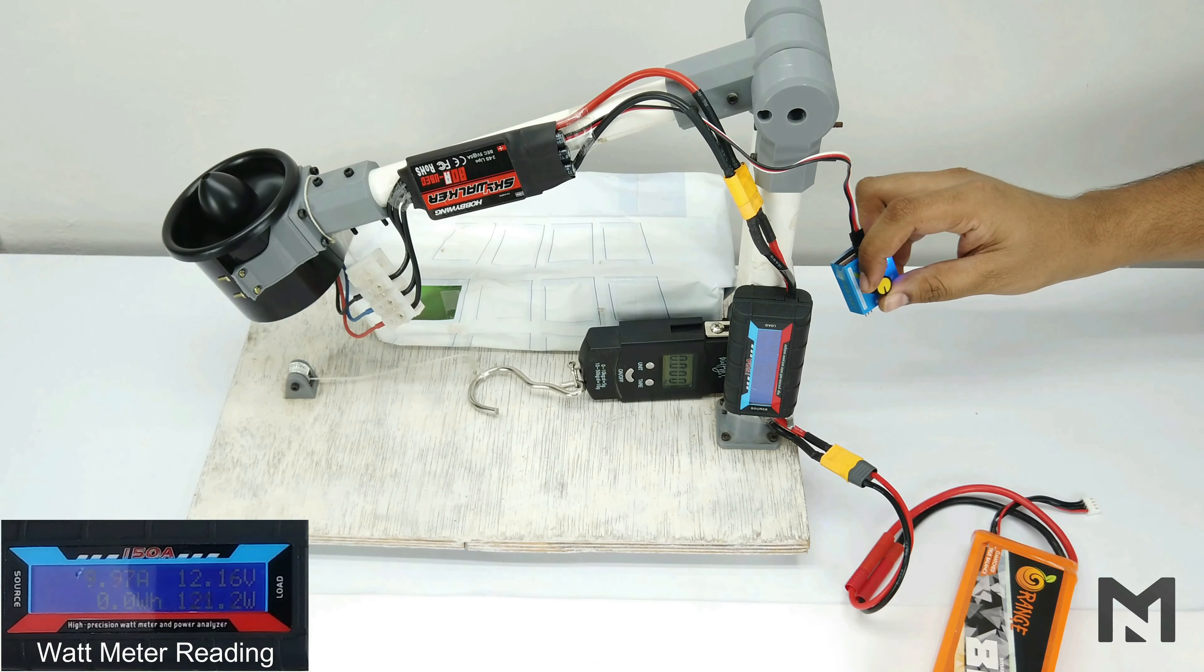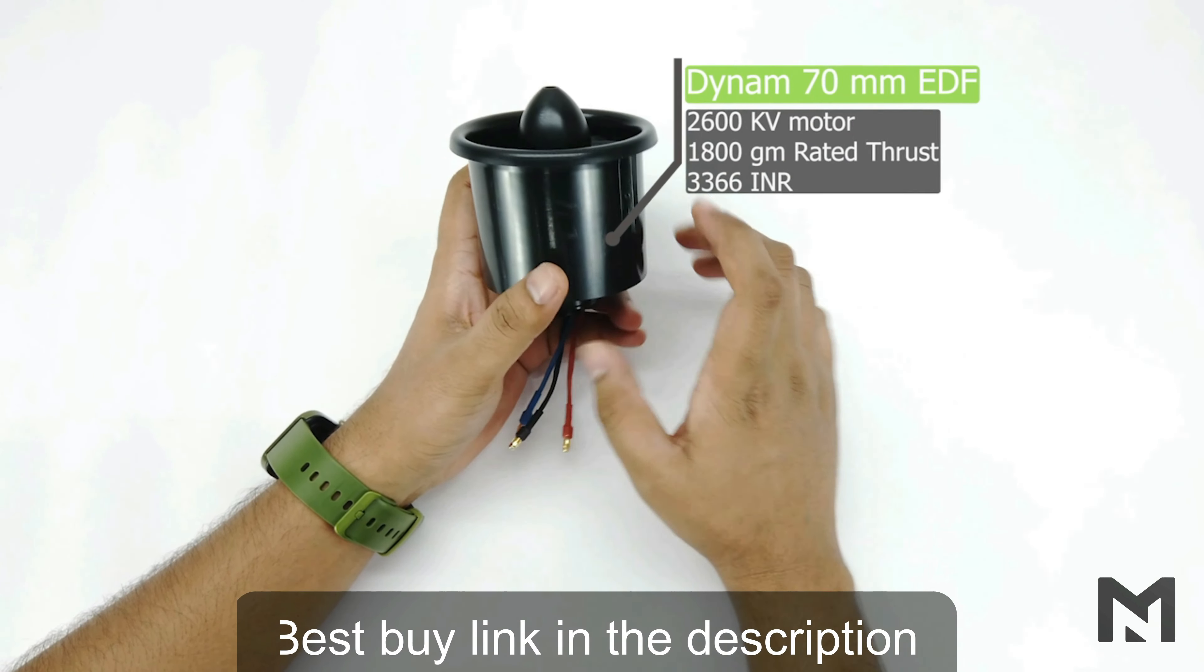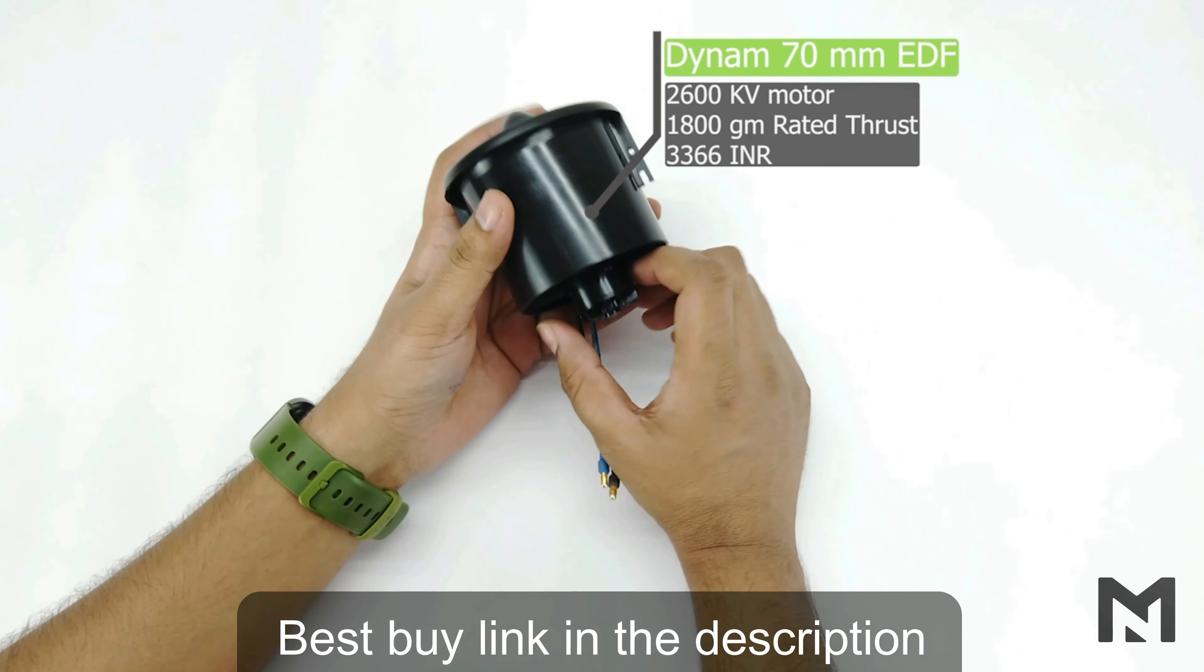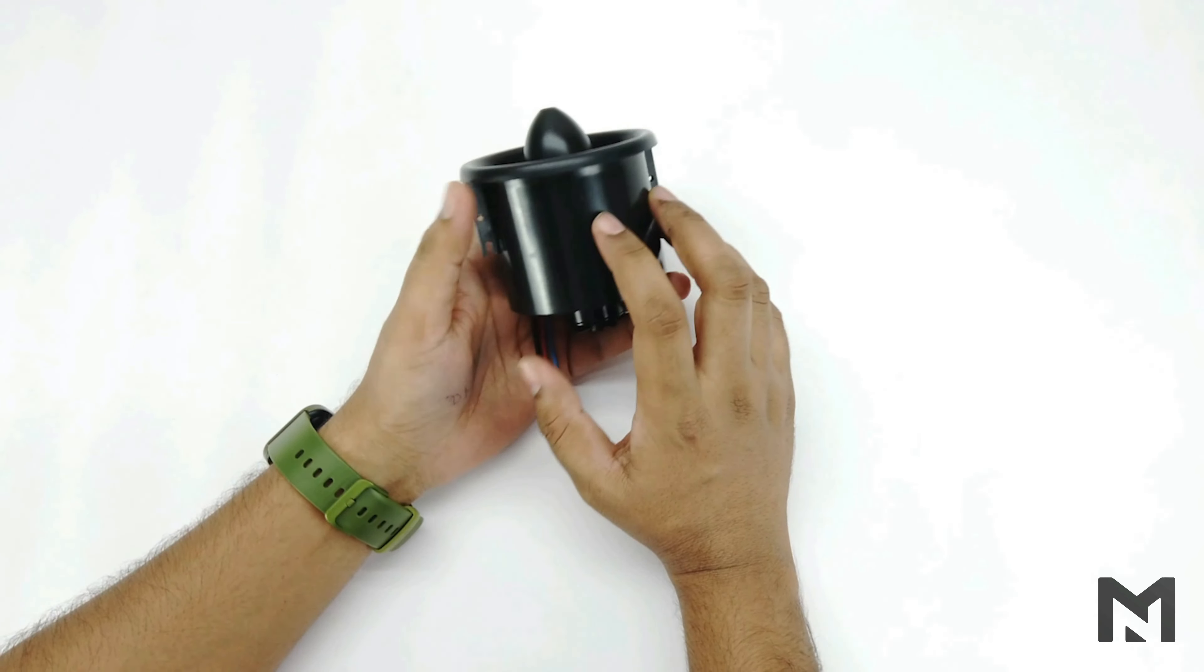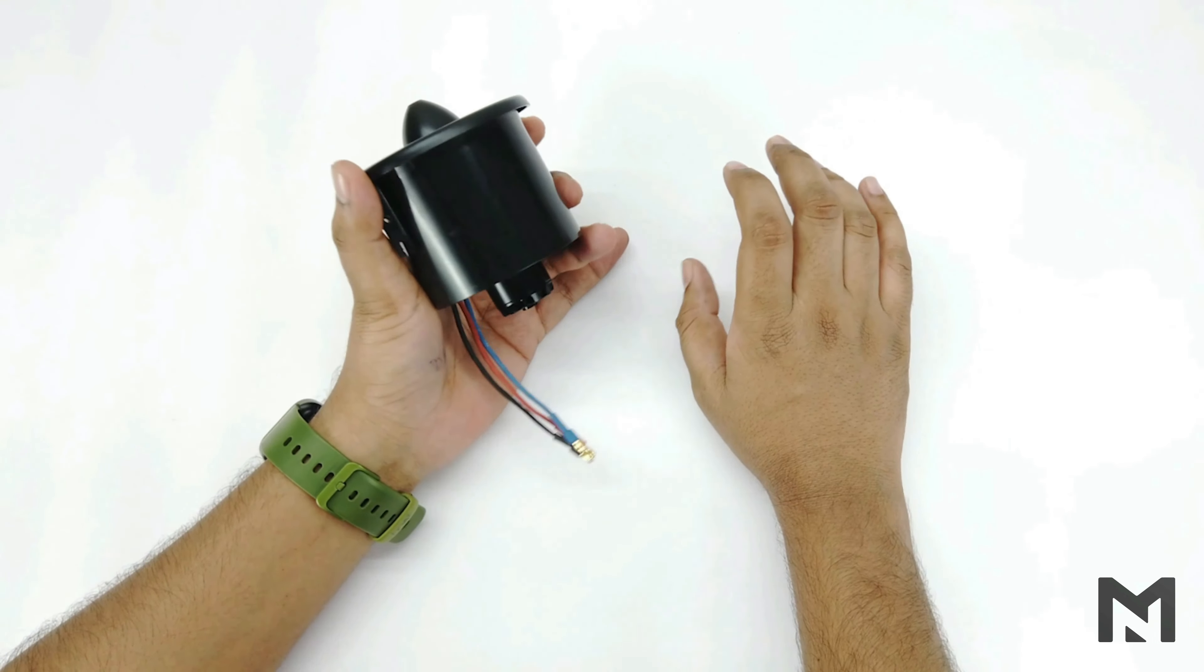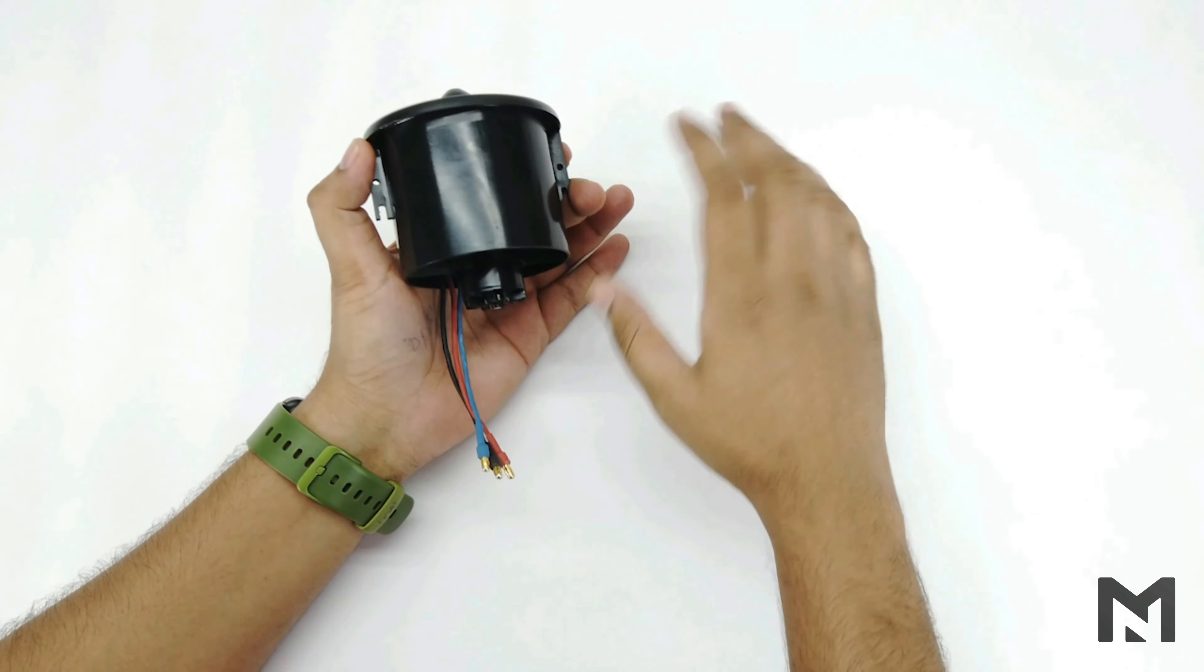In today's video, I am going to do a thrust test of this 70mm Dynam EDF. I have purchased this EDF for around $40 and its rated thrust is around 1800 grams with a 2600kV motor. In this thrust test, I will actually check if the rated thrust is the same as advertised or a little less with respect to its specification chart. I have given its best bang link in the description.